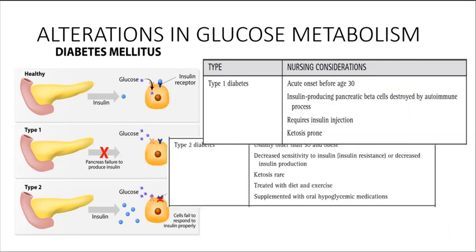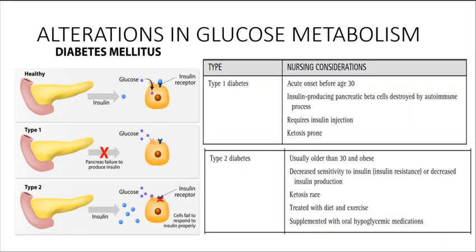With type 2 diabetes, this is usually seen in individuals older than 30 years and who are also obese. Here, there is decreased insulin production or decreased sensitivity to insulin. So you see they have this insulin resistance, so the cells fail to respond to insulin properly.